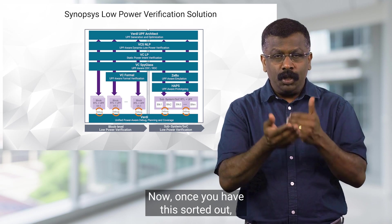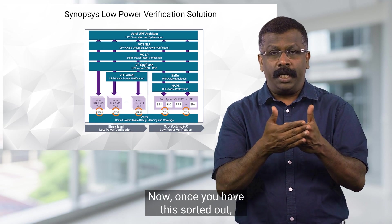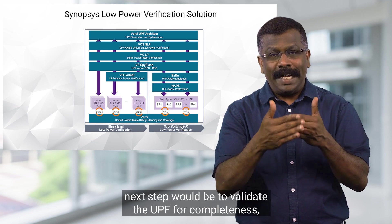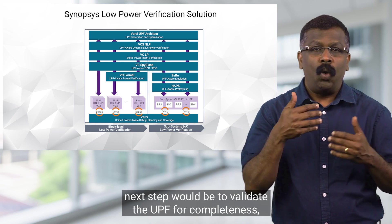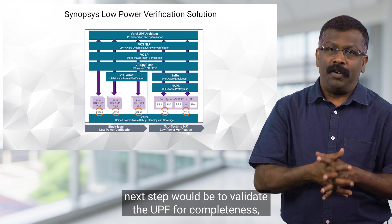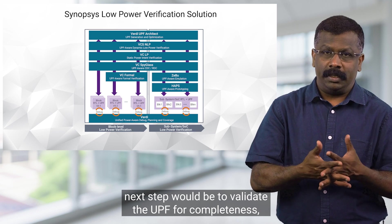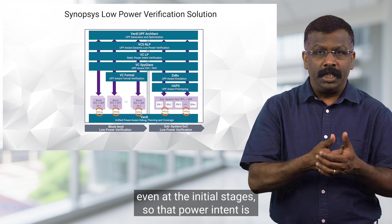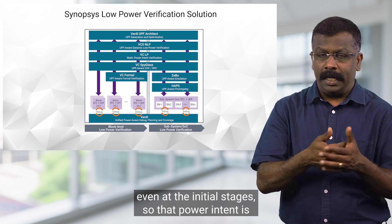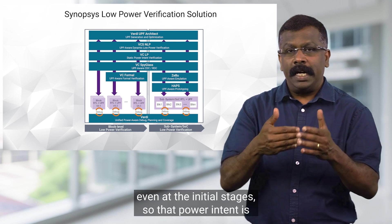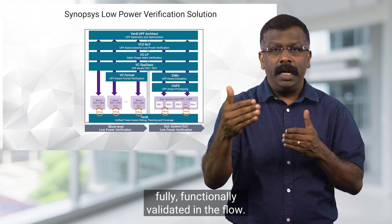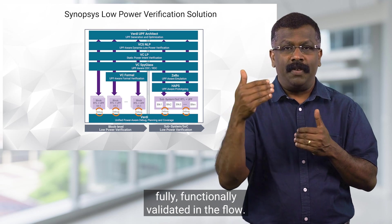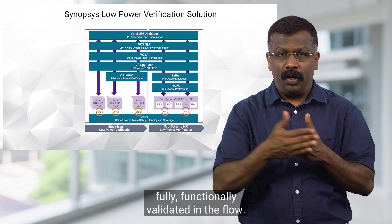This way we can contain the spec to one place, rather than having multiple sources. Once you have this sorted out, the next step would be to validate the UPF for complete nets, even at the initial stages, so that power intent is fully functionally validated in the flow.